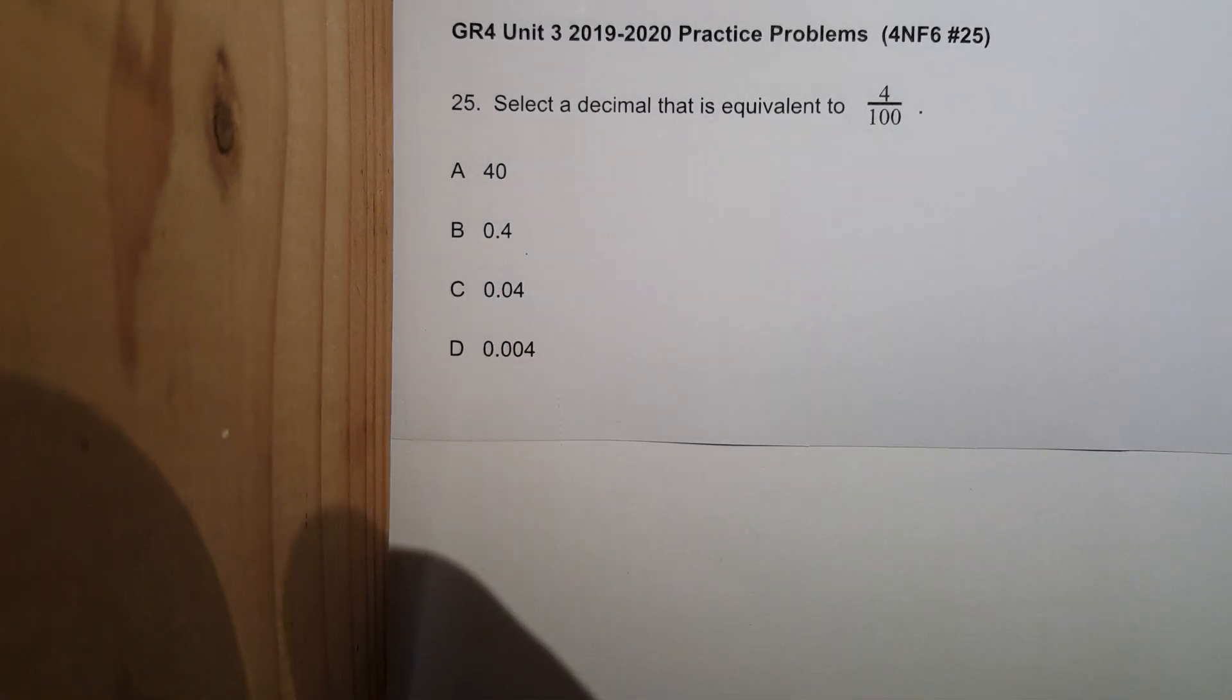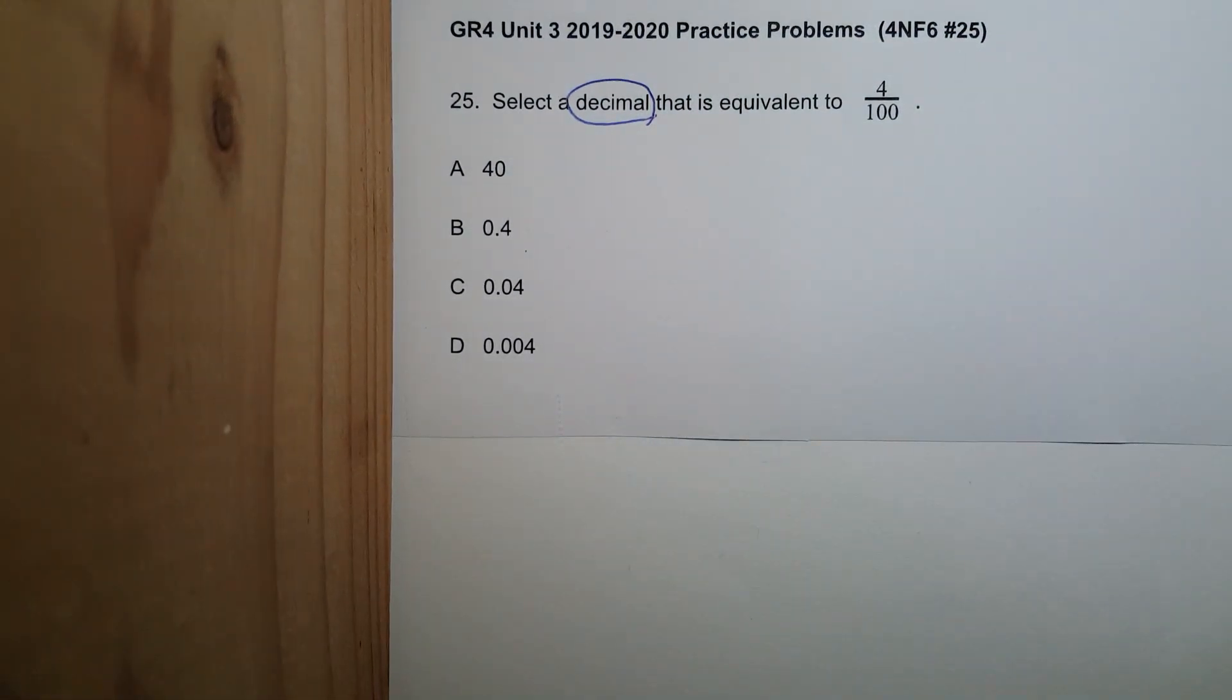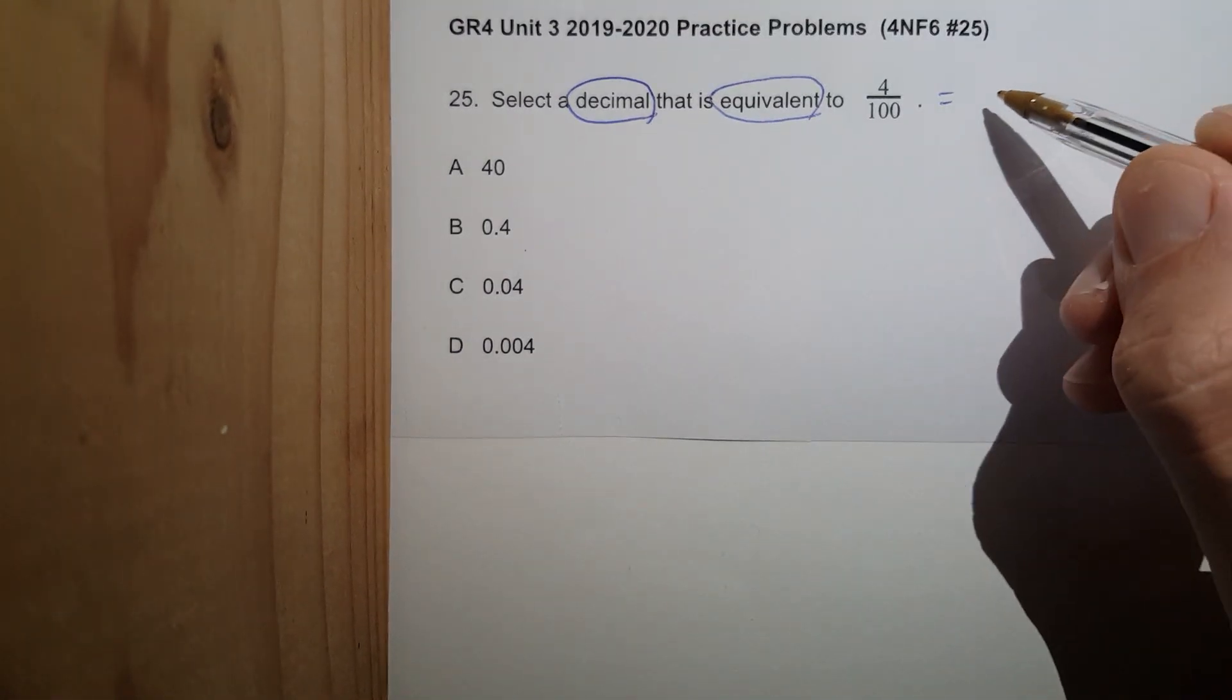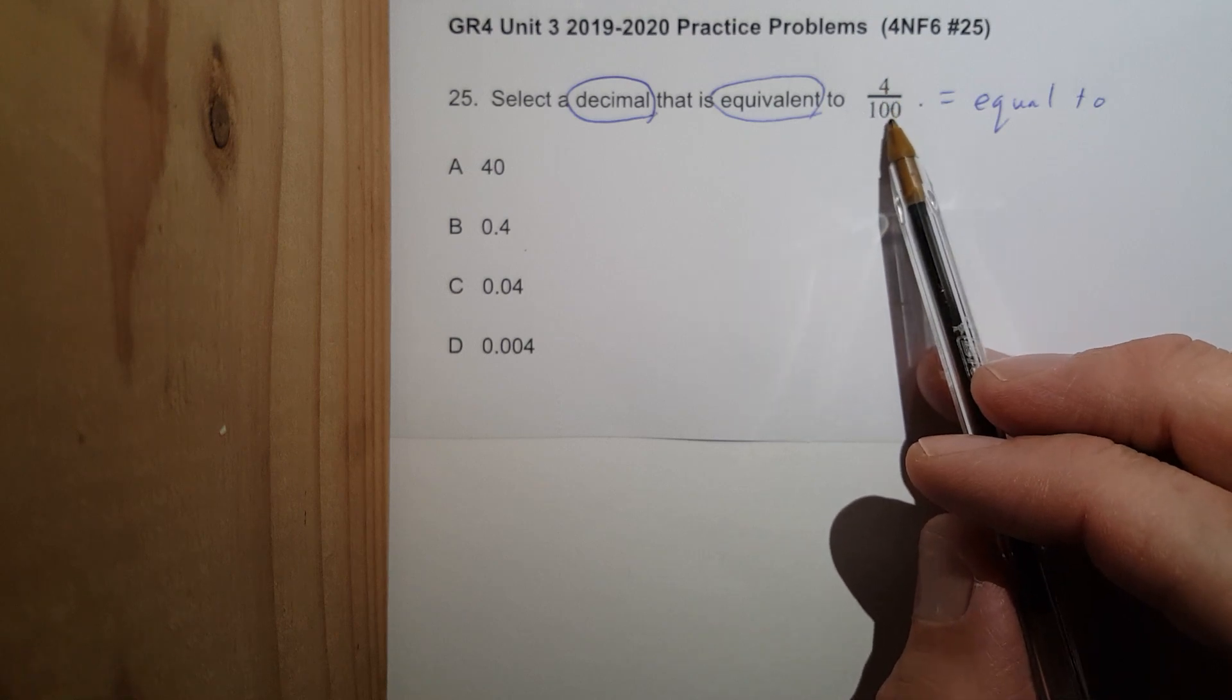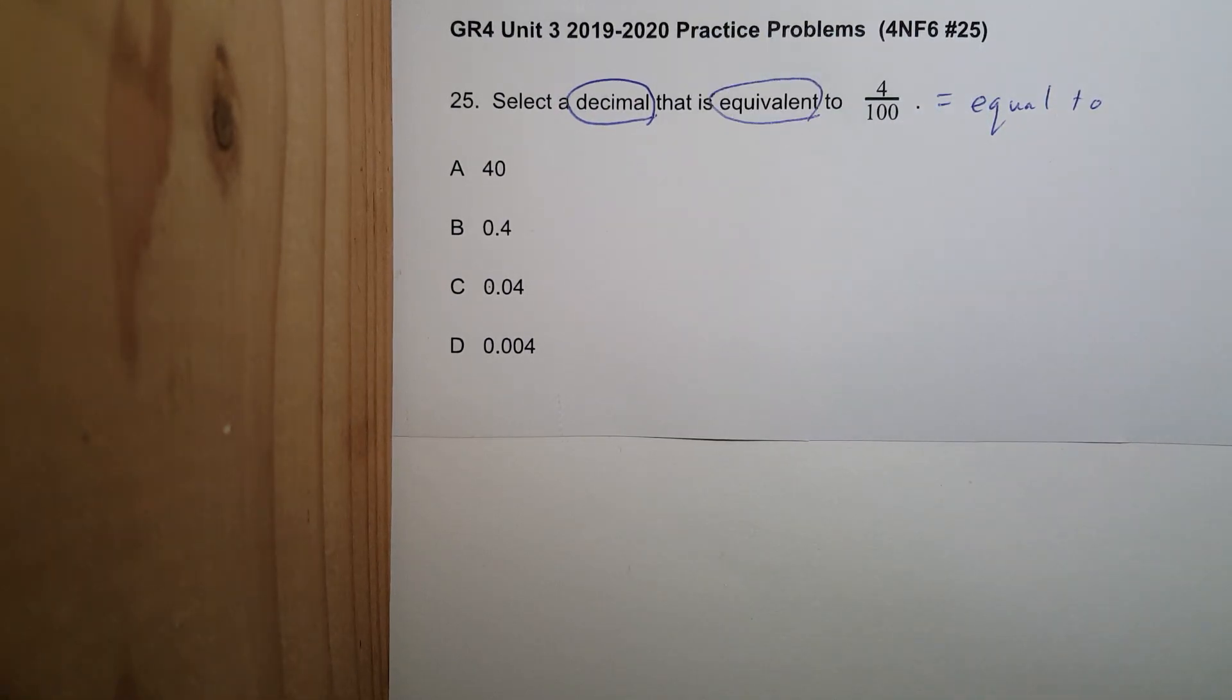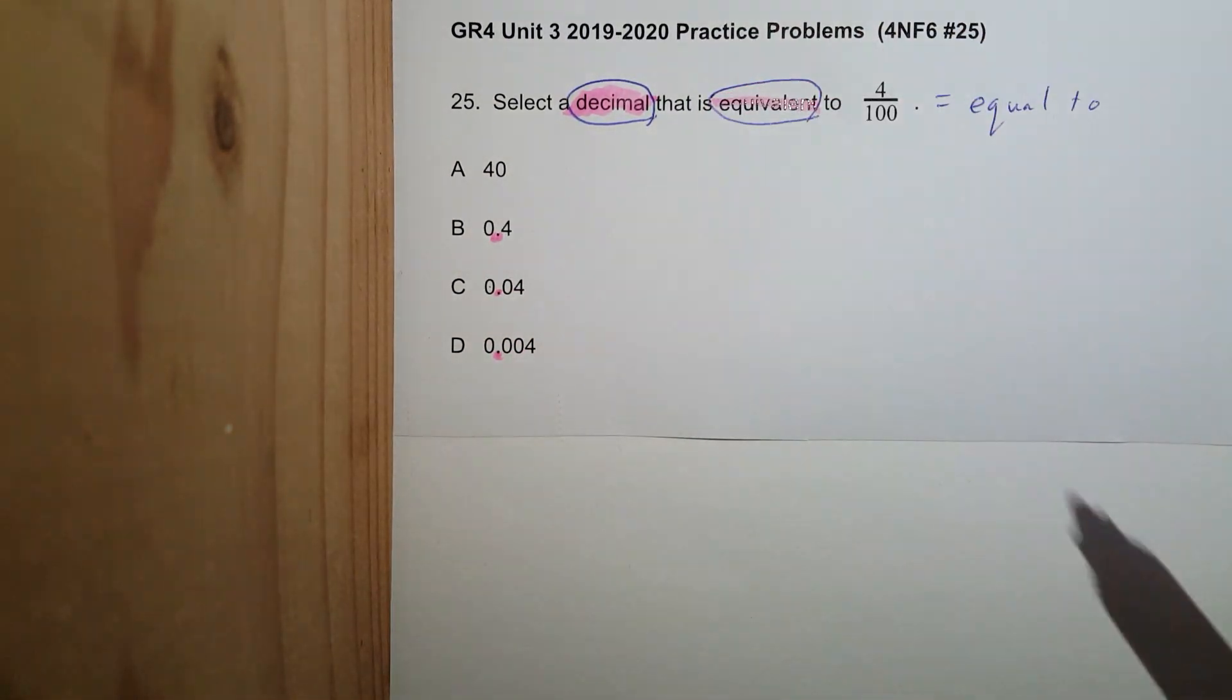Maya, just watch along. Please do not say anything. Students take awesome notes. Teachers, you know what? Give me ideas. All right, number 25. Select a decimal that is equivalent. Equivalent means equal to 4 over 100 or 4 hundredths. What's a decimal? That's a decimal.